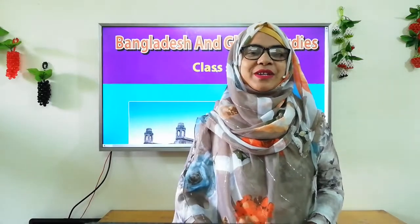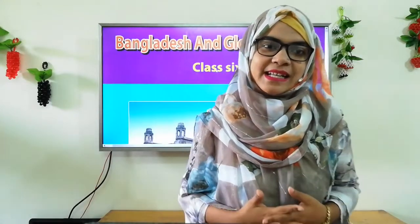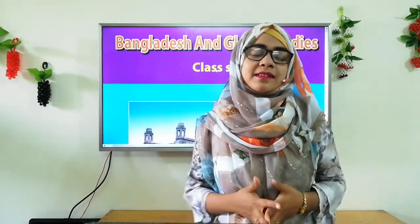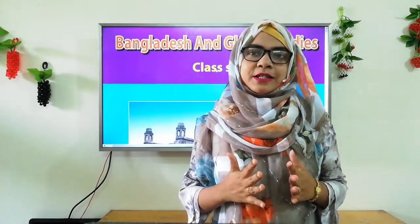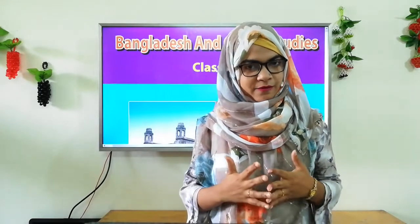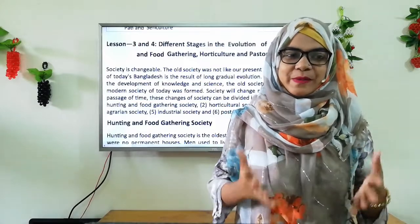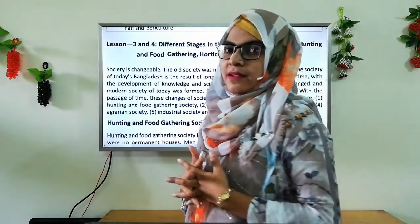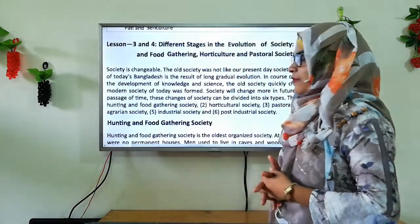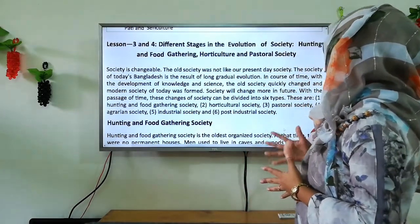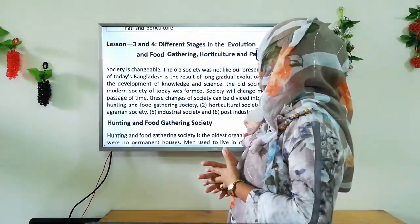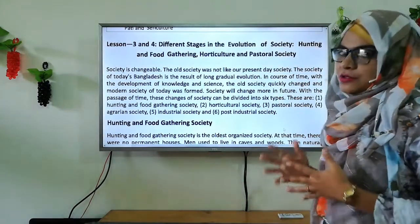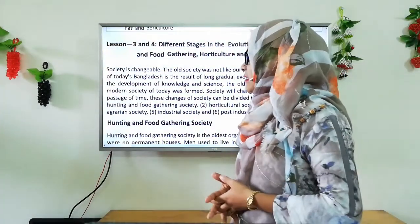Hello, Assalamu Alaikum dear students. This is your BGS class with Shakila. In the previous class we discussed chapter 5 lessons 1 and 2, and now we will discuss chapter 5 lessons 3 and 4. Open your BGS book and go to page number 43. Here we will discuss different stages in the evolution of society: hunting and food gathering, horticulture, and pastoral society.